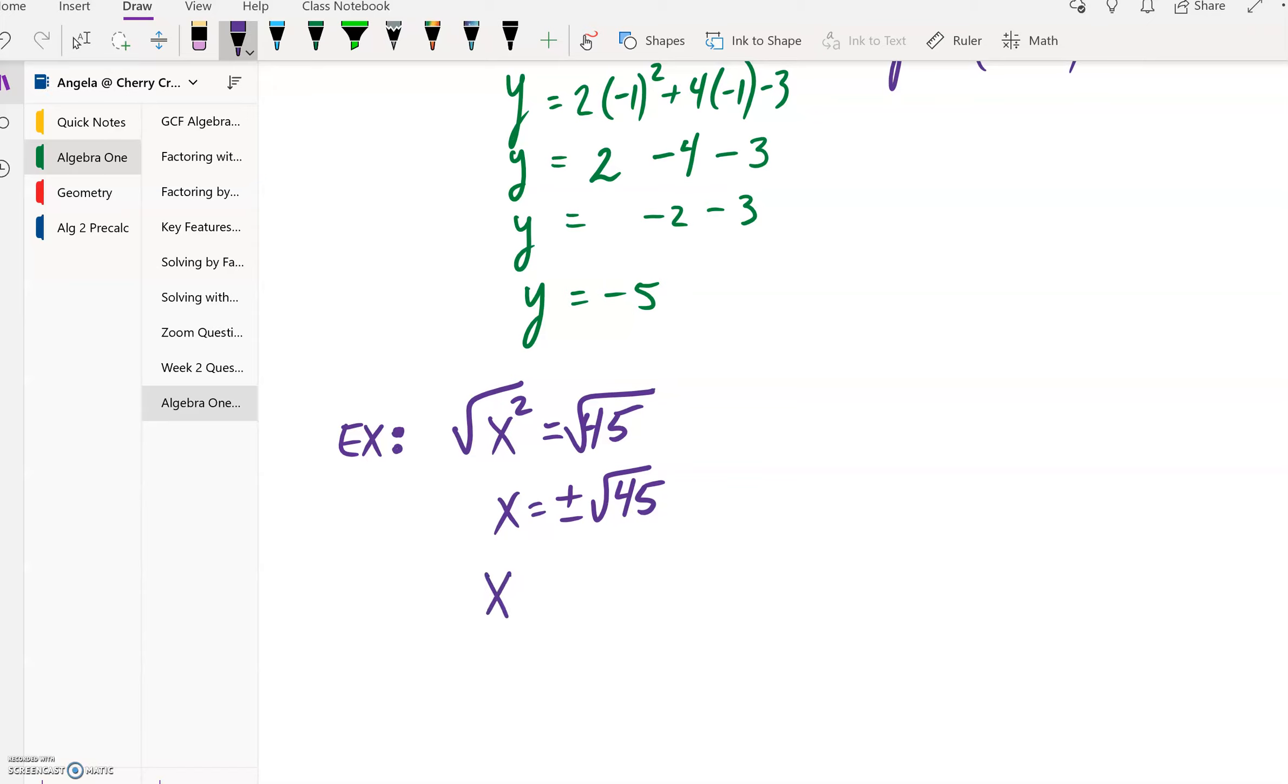So what ends up happening with this 45 is it gets broken down into 9 times 5, because 9 times 5 is 45. And this 9—√9—that is a perfect square, so it is actually going to pop out and we're actually going to separate this.